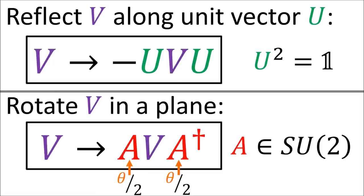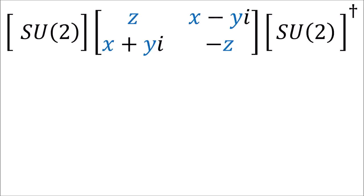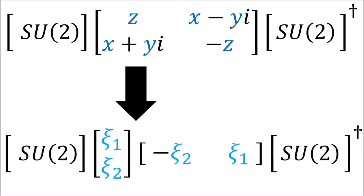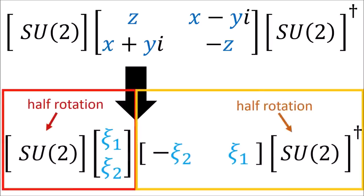Each of the two matrices performs half the rotation, so we use half angles inside the matrix entries. In the next video, we're going to see how we can factor a polyvector into a pair of polyspinors. Each polyspinor will rotate using only a single SU(2) matrix. This is why polyspinors rotate half as much as vectors do, and require two full rotations to get back to their starting point.